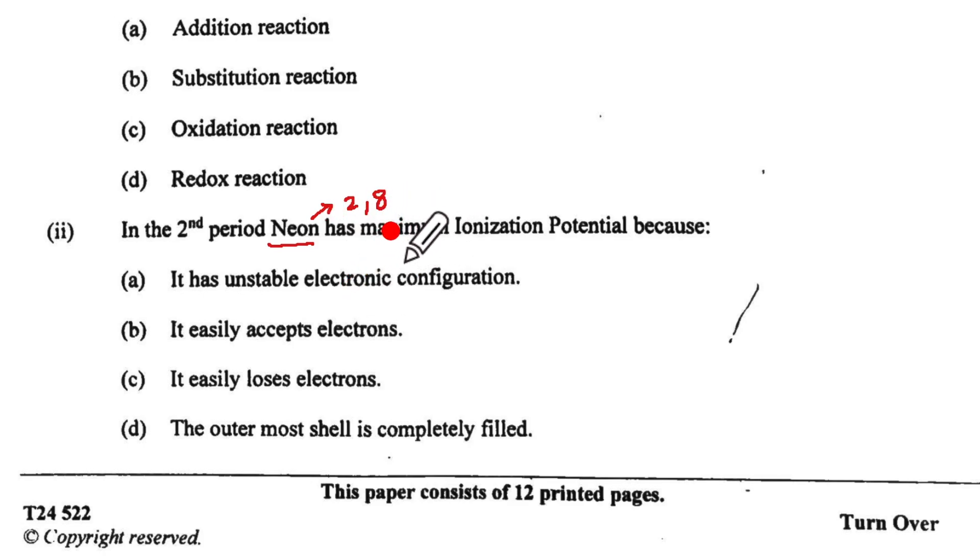So IP is going to be more. IP is going to be maximum for group 18. It has unstable electronic configuration? No. It easily accepts electrons? Never. It easily loses electrons? No. Outermost shell is completely filled. That is the correct option. So we will write second one as D option and then we write the outermost shell completely filled.